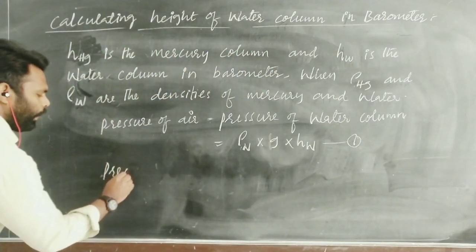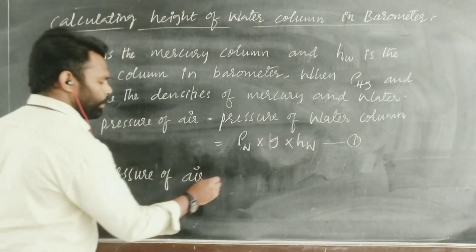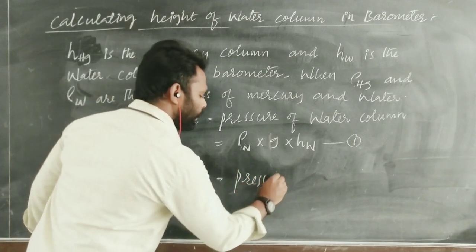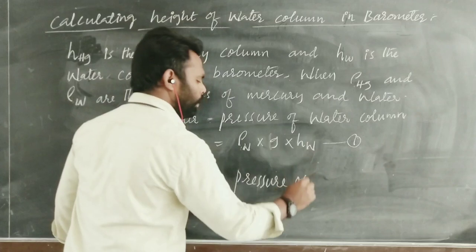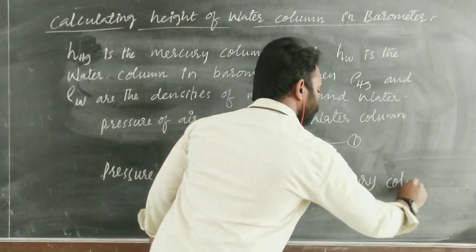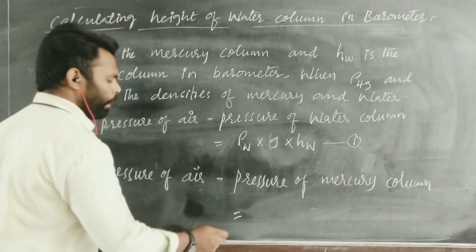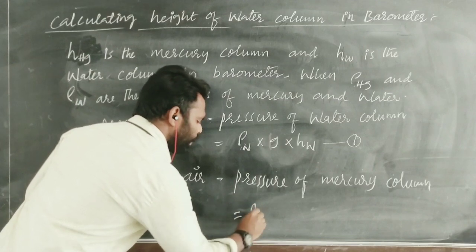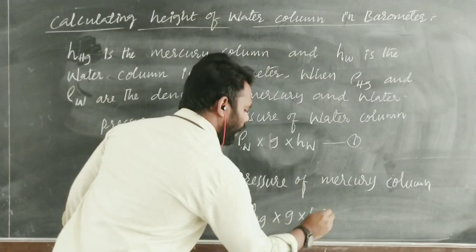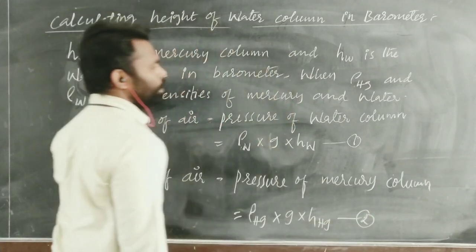Pressure of air is also equal to the pressure of the mercury column. So this is equal to the density of mercury multiplied by acceleration due to gravity multiplied by the height of the mercury column. Let us represent this as expression 2.